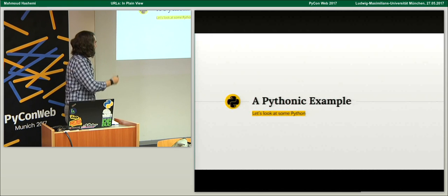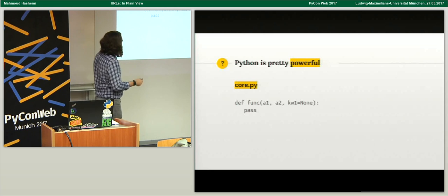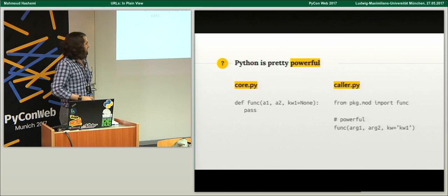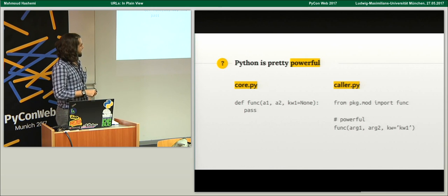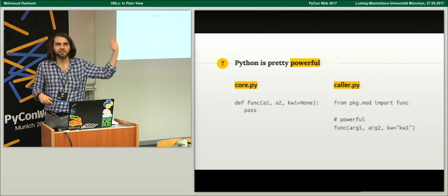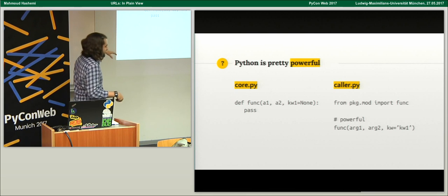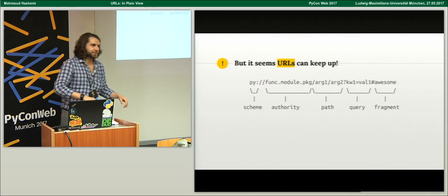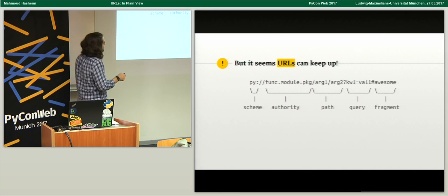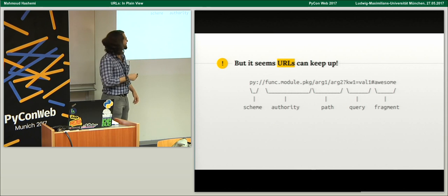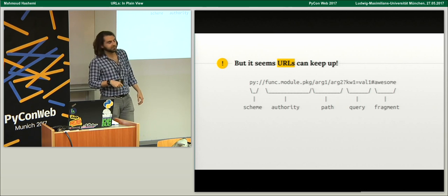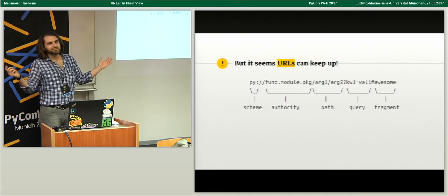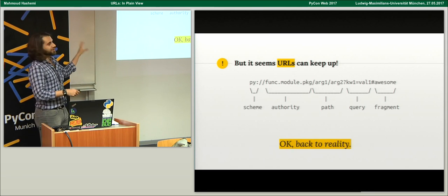Let's look at a Pythonic example to really unleash this. Python is pretty powerful — here's a function with positional and keyword arguments in core.py, imported and called in caller.py. URLs can keep up with everything we just described. We have a 'py' scheme with an authority of function.module.package (most specific to least specific), positional arguments go in the path, keyword arguments go in the query string after a question mark, and a comment goes in the fragment. URLs are powerful — but let's get back to reality.